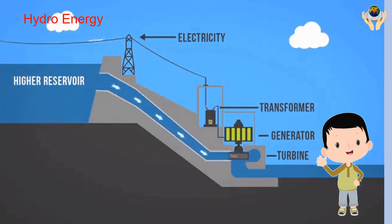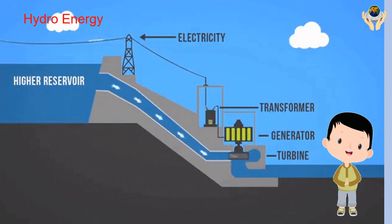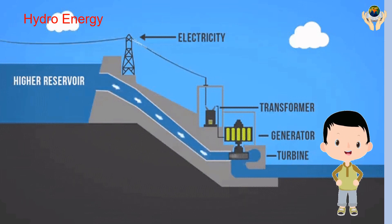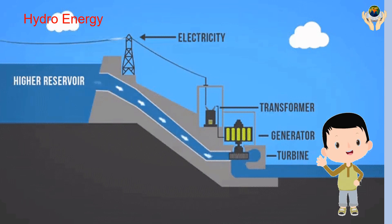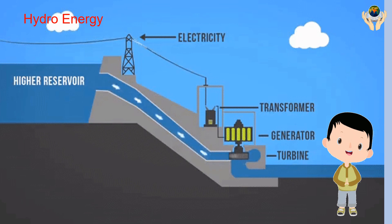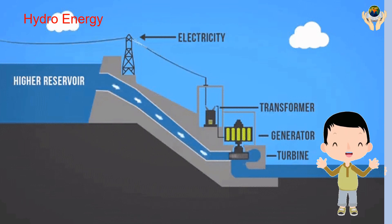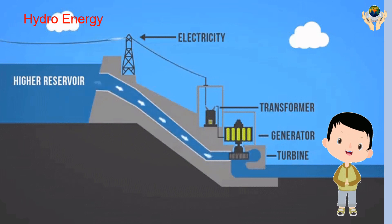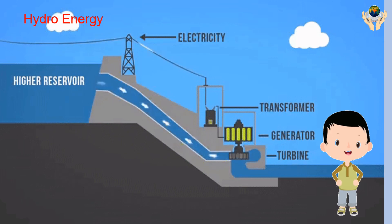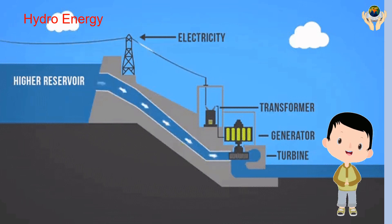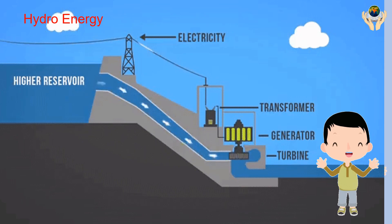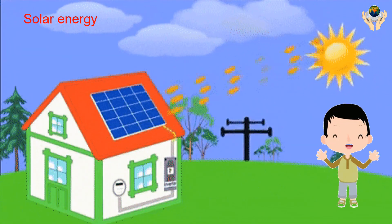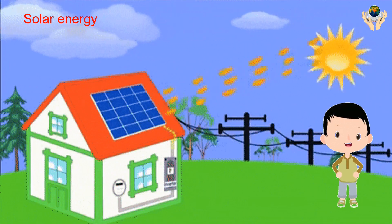To generate hydroelectric energy, a power plant needs to be installed in an area with flowing water. This may include a dam that blocks or diverts the water, and one or more reservoirs. The forced water runs the turbines, which are connected to a generator that generates the electricity.